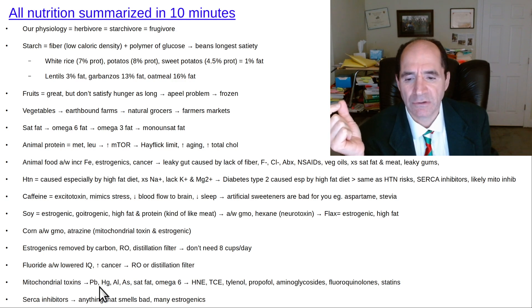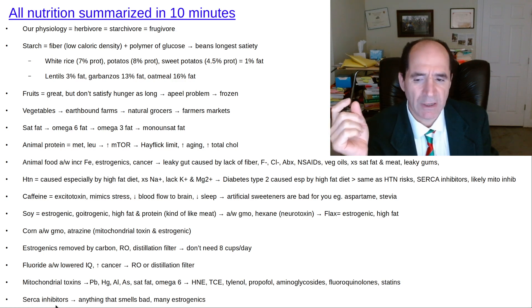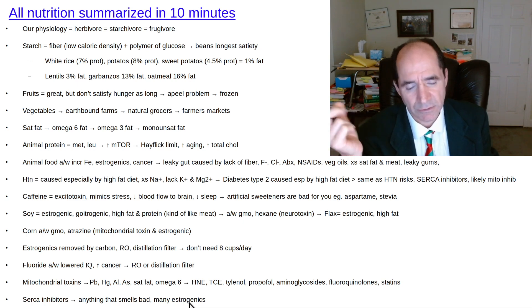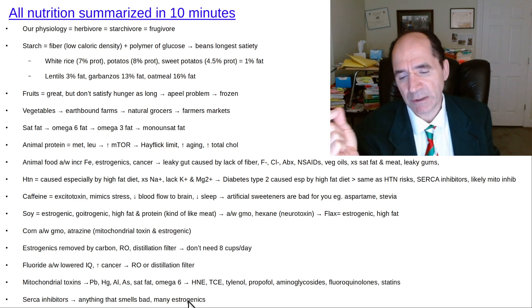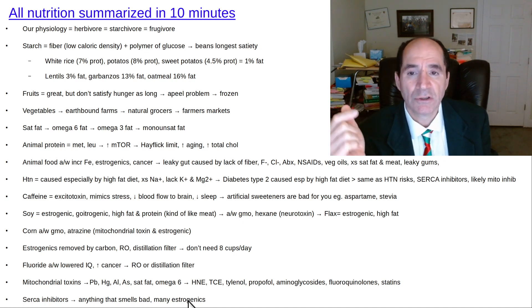Mitochondrial toxins—here's a bunch of them. There's a whole bunch more. Most people aren't aware of those. They're usually pretty easy to avoid. For example, trichloroethylene—that's why I don't use dry cleaning anymore. SERCA inhibitors, I just gave some lectures on those. Anything that smells bad is probably a SERCA inhibitor. Many estrogenic chemicals are also SERCA inhibitors. Sarcoplasmic endoplasmic reticulum calcium ATPase for pumping calcium into the endoplasmic reticulum of brain cells.